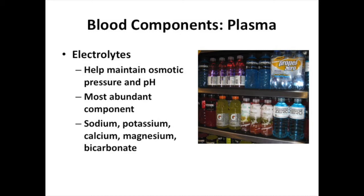Also dissolved in our plasma are electrolytes. An electrolyte is a small substance with some sort of electrical charge. For example: sodium (Na+), potassium (K+), calcium (Ca2+), and so on. They do a similar job to two of albumin's functions — helping maintain osmotic pressure and pH — which we'll cover in the kidney chapter. Electrolytes are the most abundant substance dissolved in our plasma; they're very small, but there are lots and lots of them.